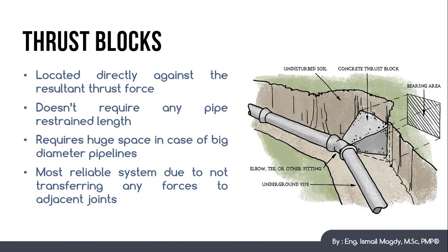First system we are going to talk about here is called thrust blocks. A thrust block is a block of reinforced concrete located directly behind the fitting we need to support. The function of this block is to resist the thrust force due to the bend using the block's own weight as well as the passive pressure behind the block.